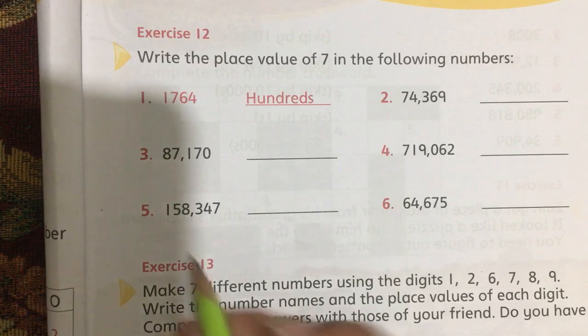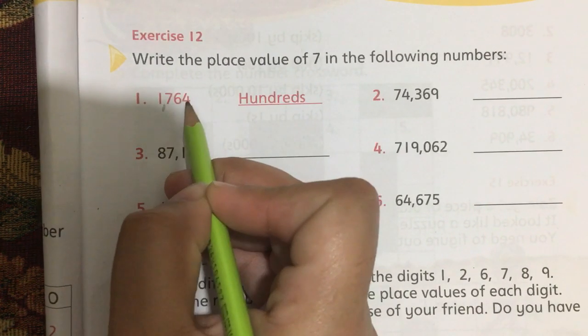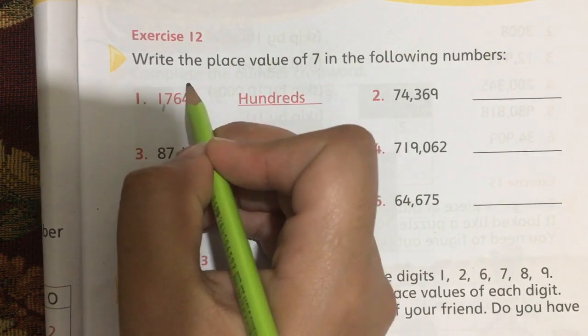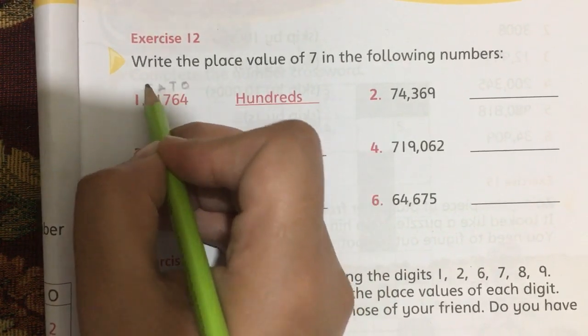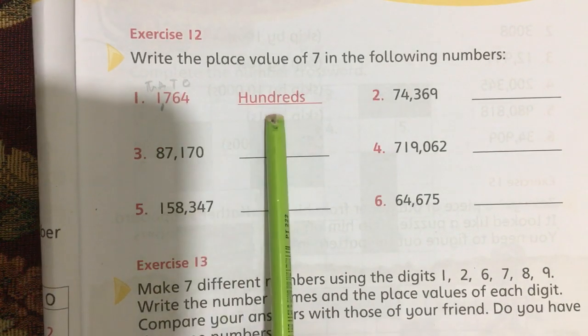The first number is 1764. The place values are 1, 10, 100, and then 1000. So in this digit, 7 has a place value of 700.